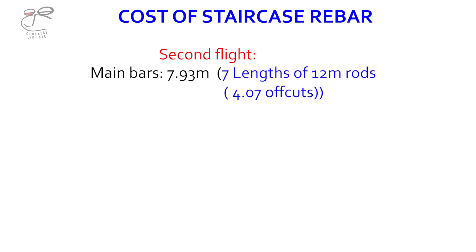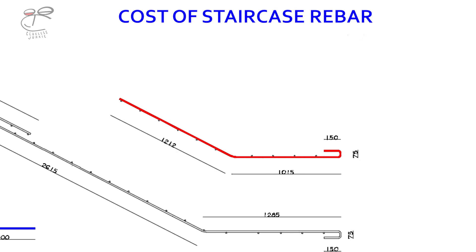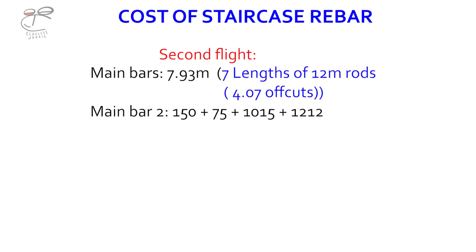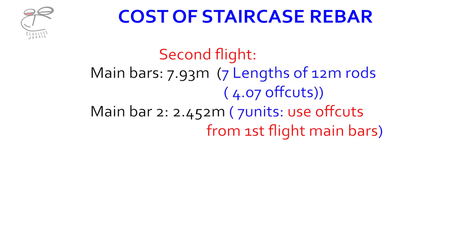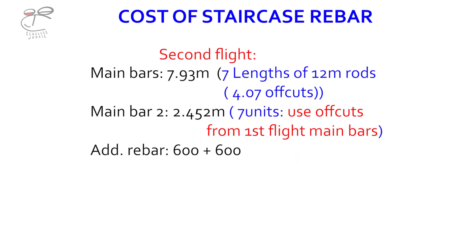That gives about a 4.07-meter off cut. Moving on to the other bar — it is also a main bar. Adding those values up gives 2.452 meters, with seven units. We use off cuts from the first flight main bars. Then the additional rebar has 600 millimeters plus 600 millimeters, which is 1.2 meters, and there are seven units of that. We use off cuts from above.